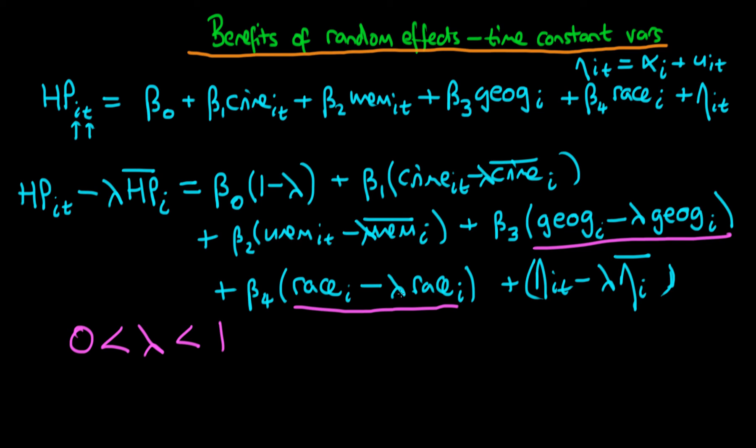They'd only disappear if lambda is equal to 1. If lambda is equal to 1, I'd just have geography minus geography and race minus race, so I wouldn't be able to estimate their effect, which is the problem we have in fixed effects estimation. But seeing as the fact that lambda is not equal to 1, we are actually going to be able to estimate the effect of these time-constant factors on house prices.